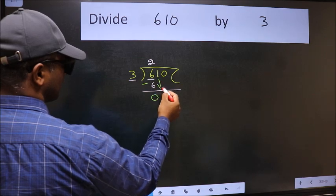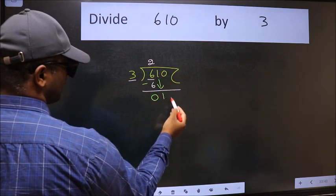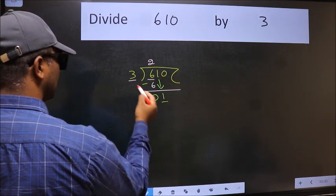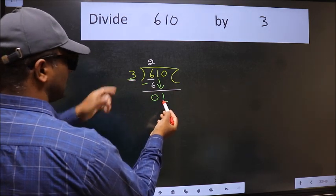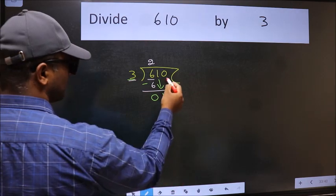After this, bring down the beside number. So 1 down. Now here we have 1 and here 3. 1 is smaller than 3, so we should bring down the second number.